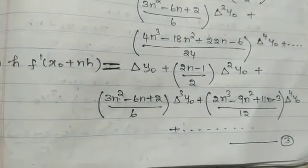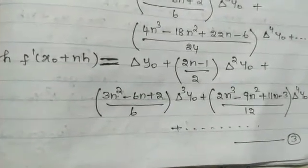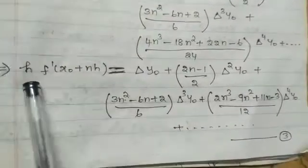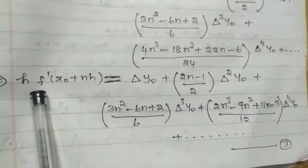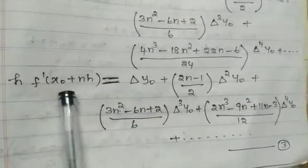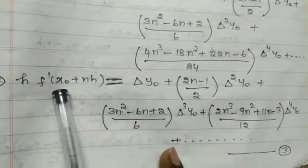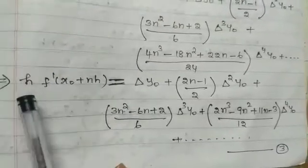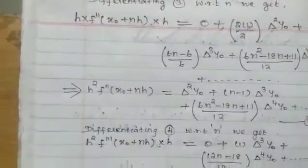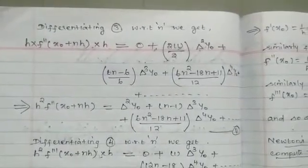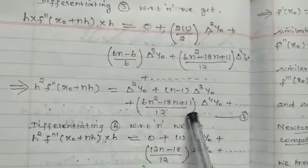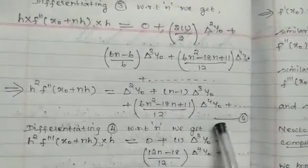To find f″(x₀ + nh), differentiate equation 3 with respect to n. Since h is a constant, differentiating again gives h²·f″(x₀ + nh). After differentiation, the right side becomes: Δ²y₀ + (n−1)·Δ³y₀ + (6n²−18n+11)/12 · Δ⁴y₀. We mark this as equation number 4.